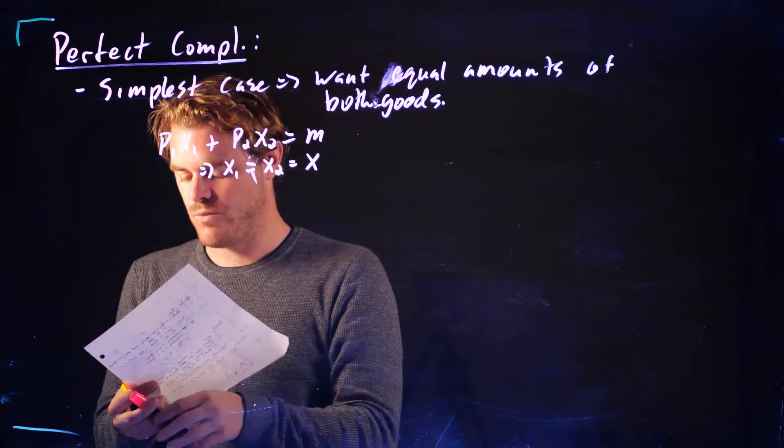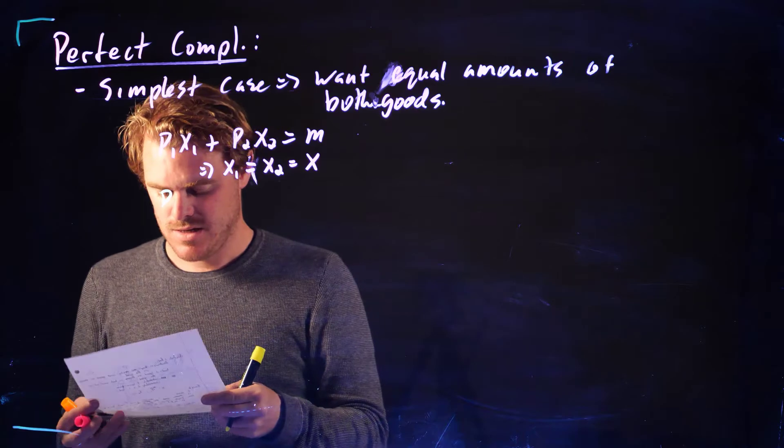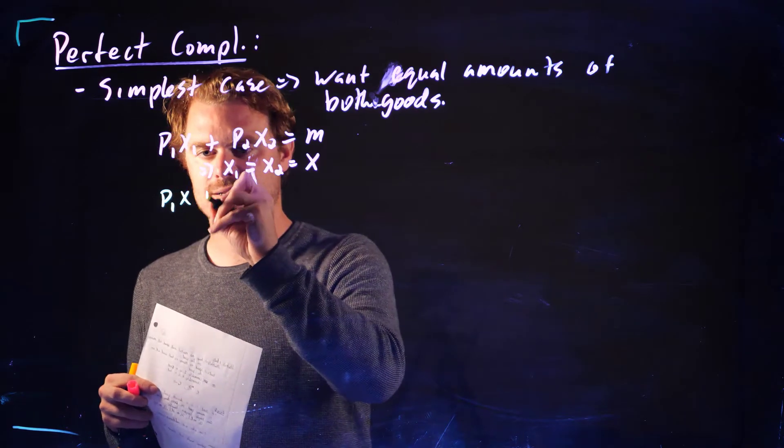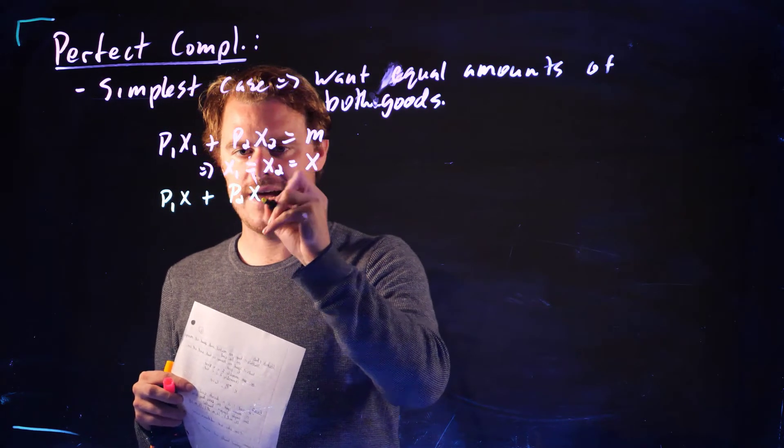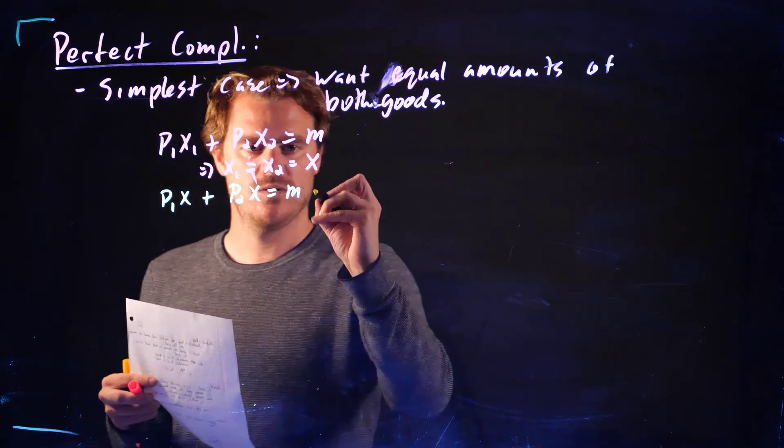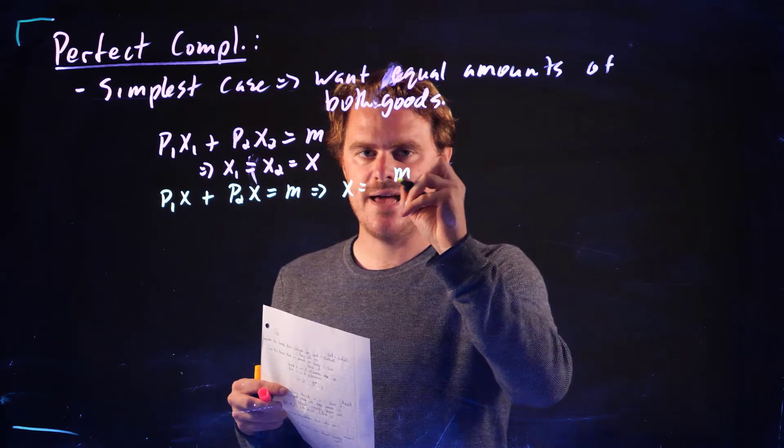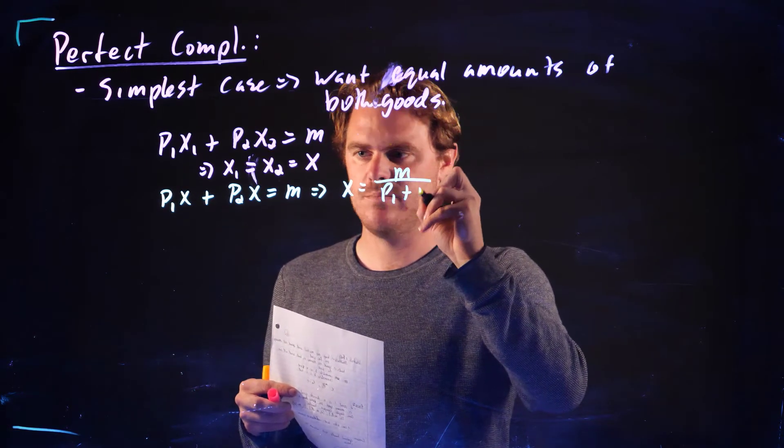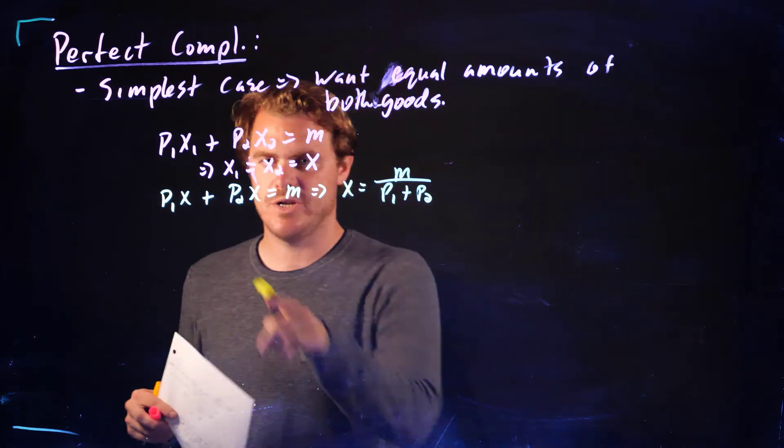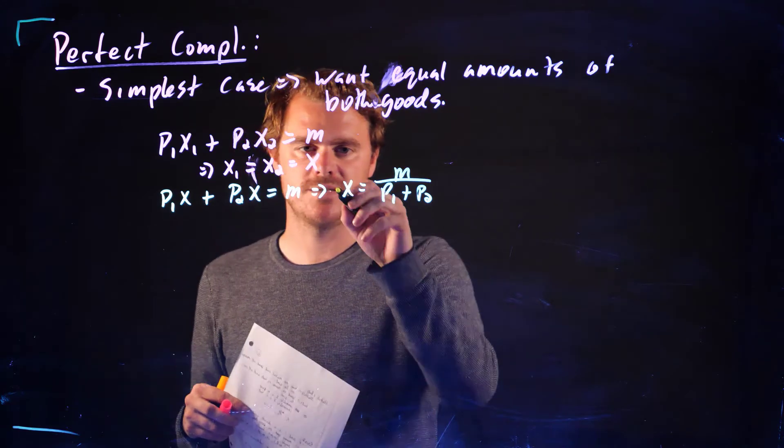And so essentially, P1 of X is costing us P1 plus P2. So if this is true, then we can rewrite our budget constraint. That's P1 X plus P2 X equals M. Which means X equals M over P1 plus P2.